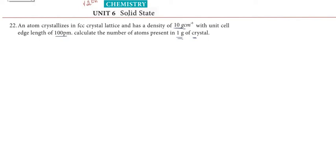Hi students, greetings from Success Education Academy. Chemistry Unit 6 solid state, book back evaluation, 22nd problem. An atom crystallizes in an FCC crystal lattice and has a density of 10 grams per centimeter cube with a unit cell edge length of 100 pm. Calculate the number of atoms present in 1 gram of crystal.